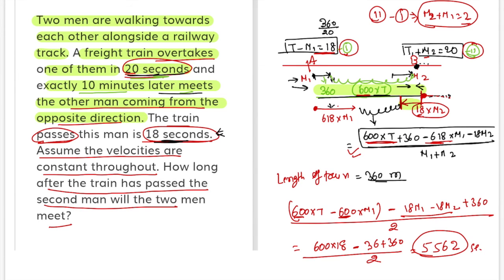If I divide it by 60, we are getting 92.7. 92.7 means the answer of this problem is 92 minutes 42 seconds.